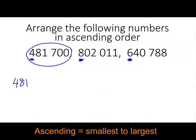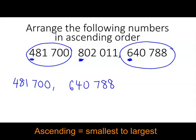So let's put this one down first. Next, out of the other two numbers, we want to identify which is the next smallest number. Between the 8 or the 6, the 6 is the next smallest number, so this number is the second smallest, followed by the last number. So these numbers in order: 481,700, 640,788, followed by 802,011.